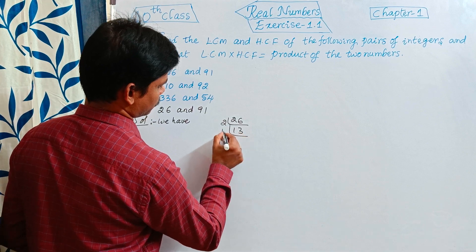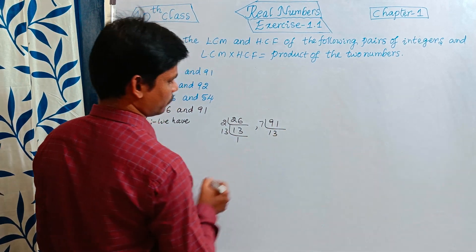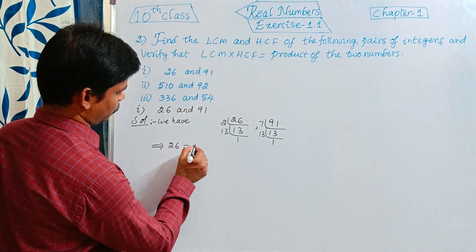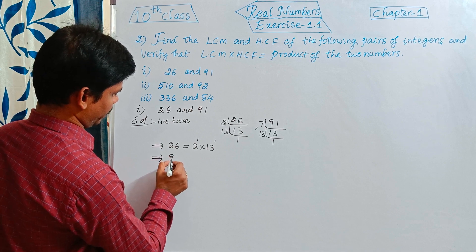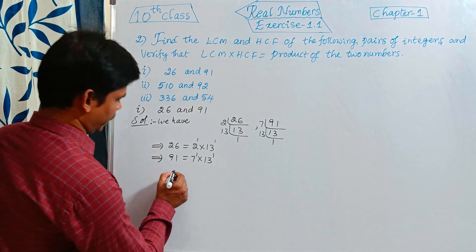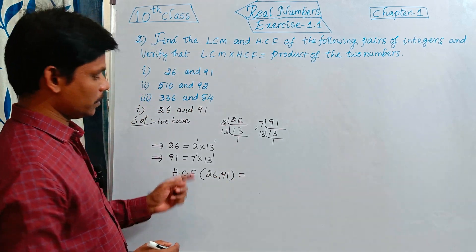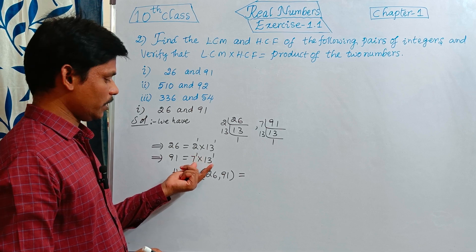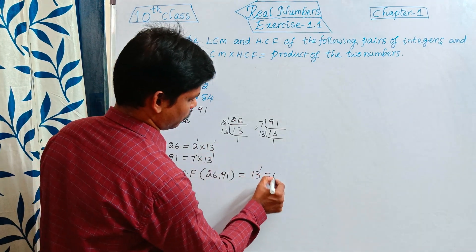For 26: 2 divides 26 giving 13, so 26 = 2 into 13, that is 2 power 1 into 13 power 1. For 91: 7 divides 91 giving 13, so 91 = 7 into 13, that is 7 power 1 into 13 power 1. Now HCF of 26 and 91: HCF uses the smallest powers of common factors. The common factor is 13, with smallest power 1. So HCF = 13.